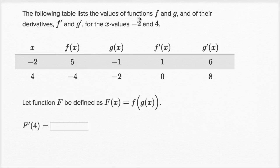The following table lists the values of functions f and g and of their derivatives f prime and g prime for the x values negative two and four. And so you can see for x equals negative two, x equals four, they give us the values of f, g, f prime, and g prime.